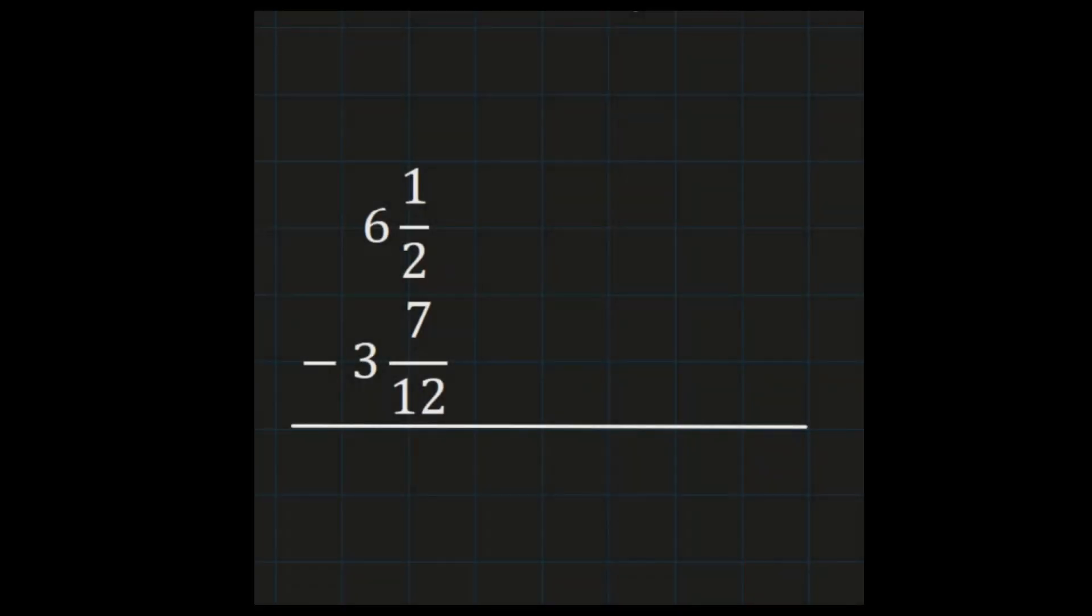For our second example, we have 6 and a half minus 3 and 7/12. And I don't have common denominator here, so I do need to start with that step, because when you go to subtract, you have to start with the fractions. So with halves and 12ths, my common denominator is going to be 12. And I'm going to go ahead and set that up and deal with my denominator first. I already have 12ths with 3 and 7/12, so I'm just going to rewrite that part of my problem so I can keep everything straight. And the question is, what did I multiply 2 by to get to 12? Well, I multiplied 2 by 6. So to make an equivalent fraction, I need to multiply my numerator of 1 by 6. 1 times 6 is 6, and I'm going to bring over my whole number just so I can keep everything lined up.